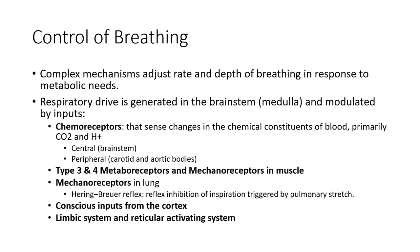Breathing is controlled by the input and processing of multiple different inputs. The primary inputs are chemoreceptors, which are located in the brainstem as well as in the periphery at the carotid and aortic bodies. We also have inputs from metaboreceptors and mechanoreceptors in the muscles. When we have higher amounts of metabolites build up in muscles, that facilitates breathing, as does movement in the joints.